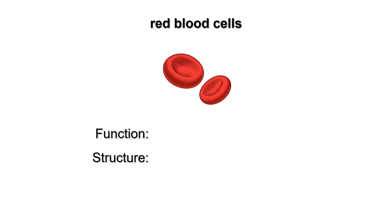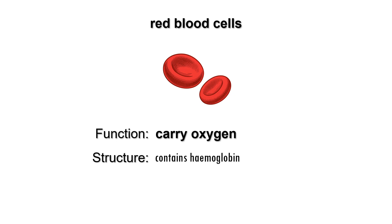If you look at red blood cells, they contain the red pigment hemoglobin to carry oxygen. Hemoglobin can bind with oxygen in the lungs and release it in tissues. Red blood cells lack a nucleus, which makes more space for hemoglobin to carry more oxygen. They also have a disc-like biconcave shape, which helps oxygen diffuse more quickly in and out of red blood cells.